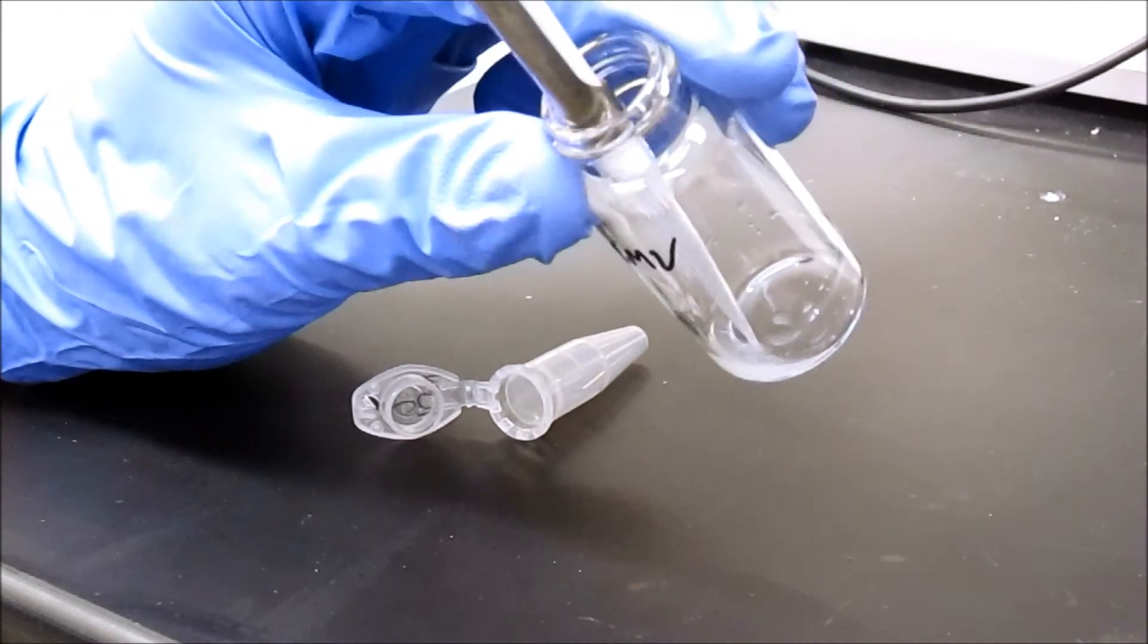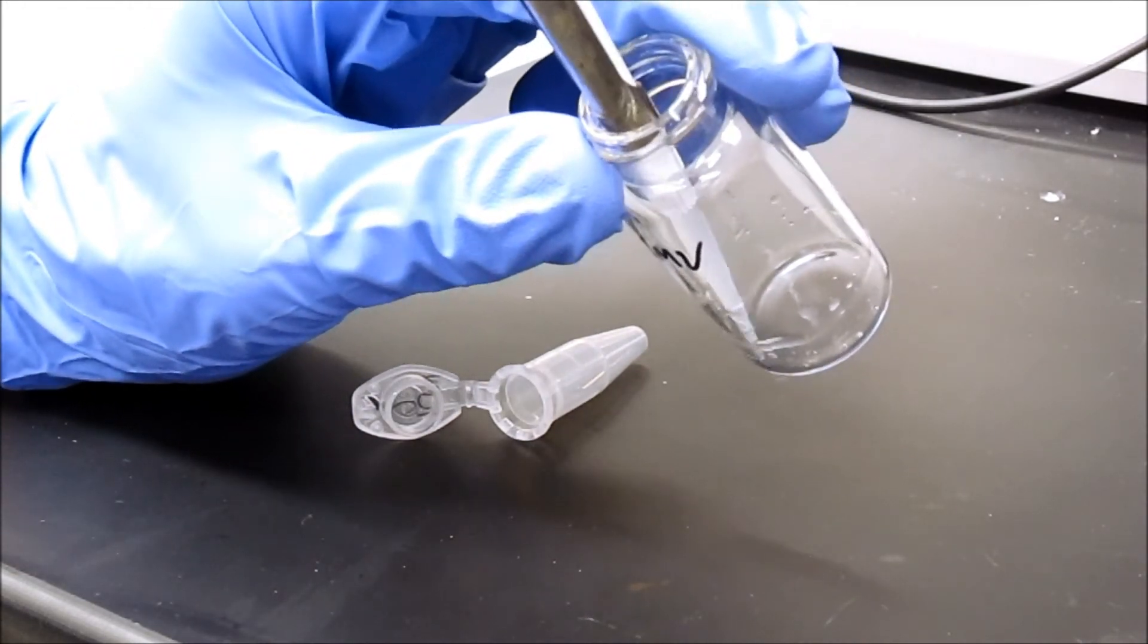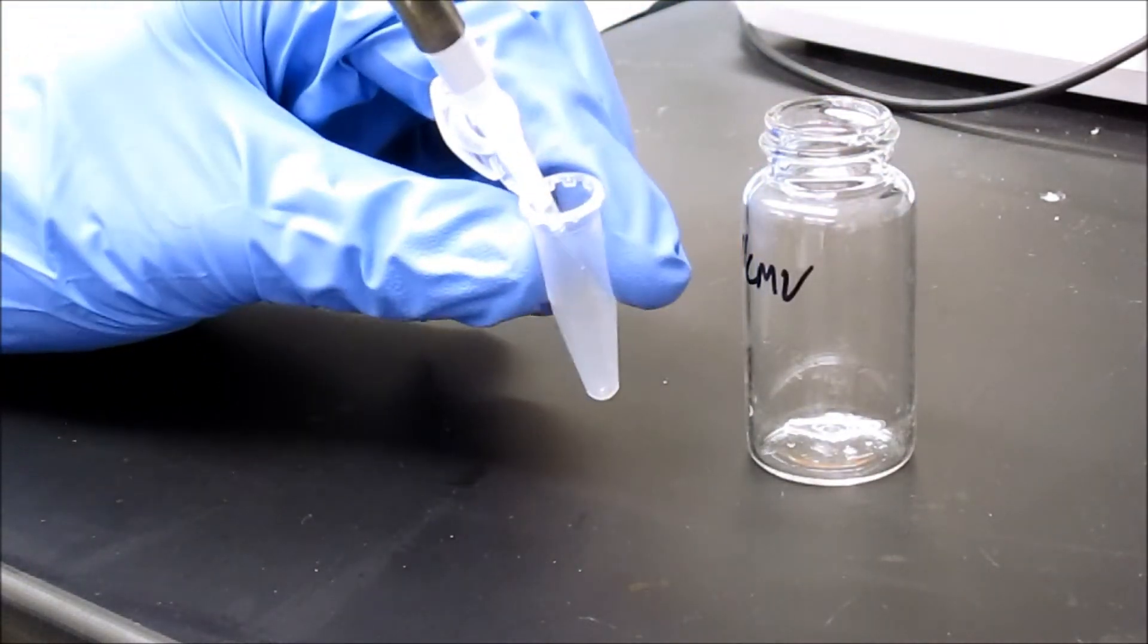Now that the liposomes have been successfully assembled, they must be removed from the vial and placed into a 1.5 milliliter Eppendorf tube.